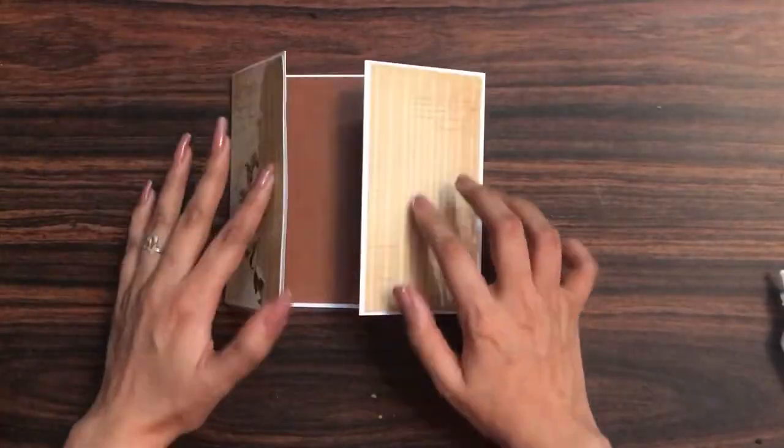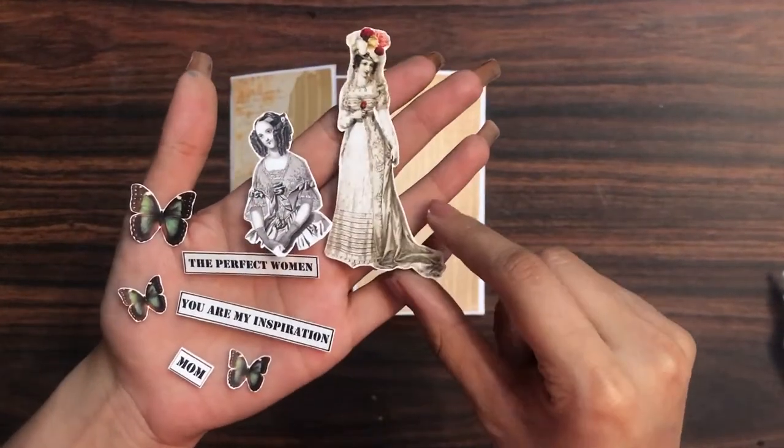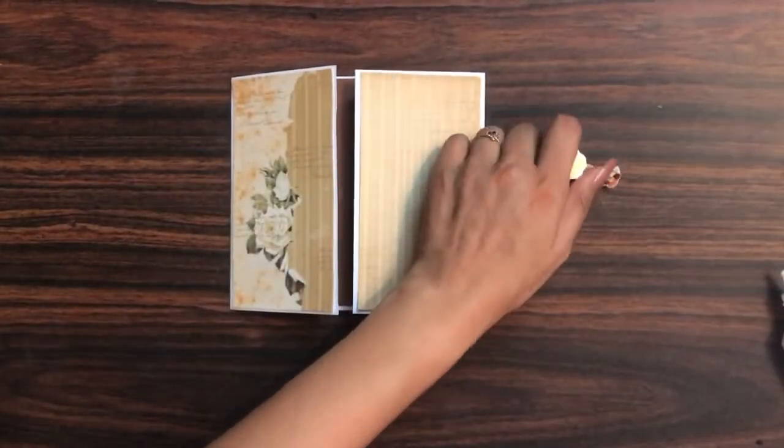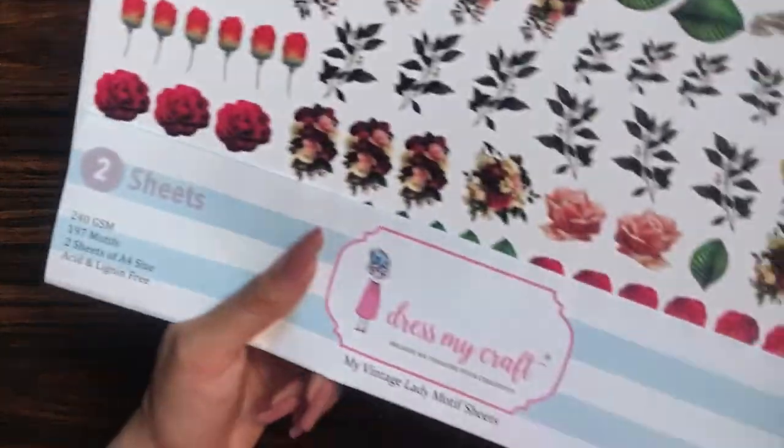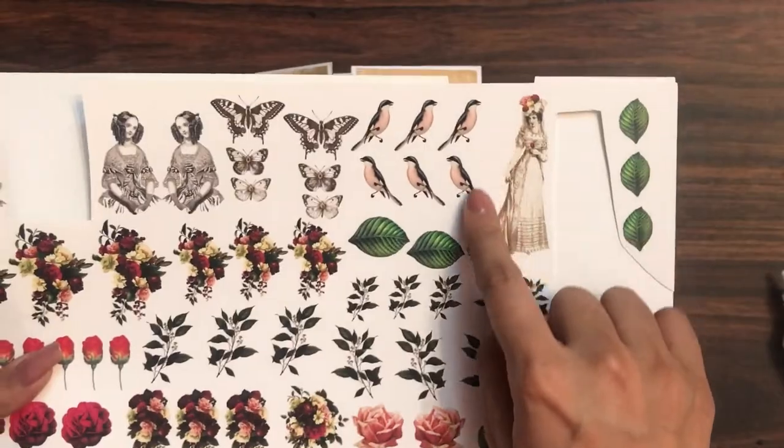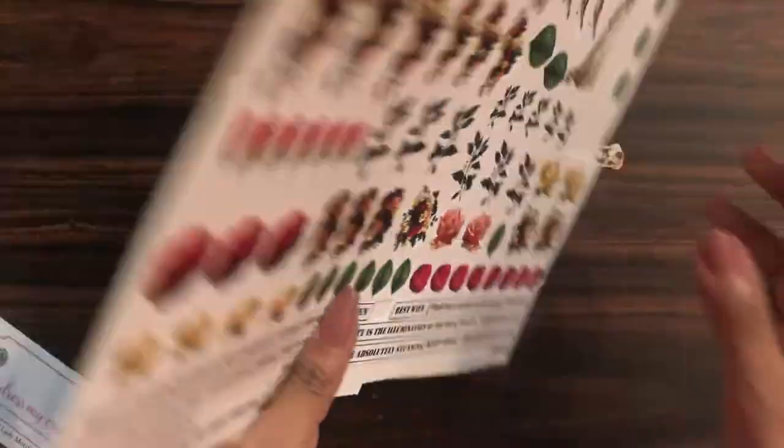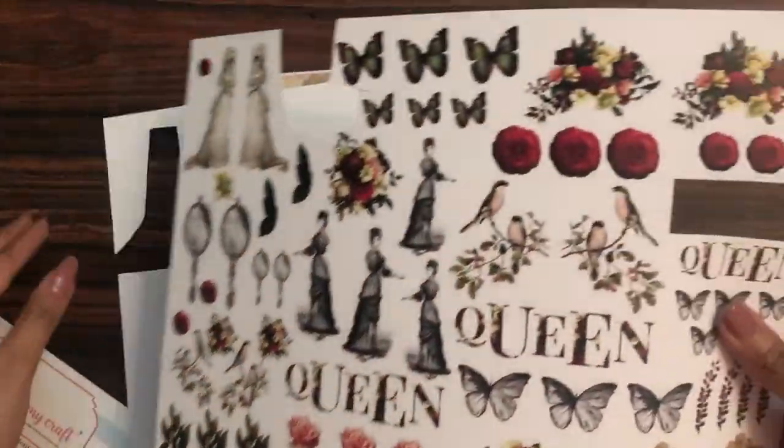Now our base of the card is ready, it's time to embellish the card. Here I have some of these fussy cut images and some sentiments. I have used the Dress My Craft Vintage Lady Motif sheet and have done fussy cutting and used these sentiments to fussy cut those elements.